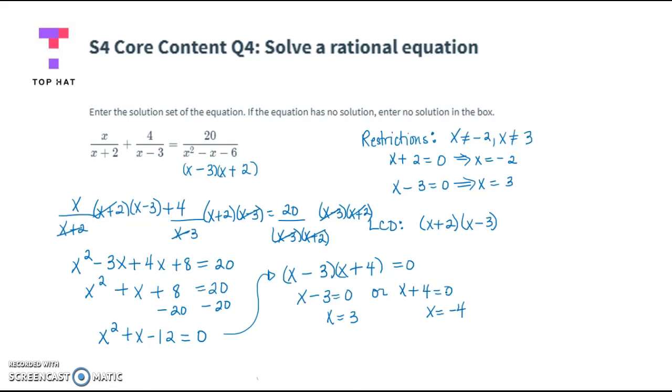But remember what we have to do with rational equations, we don't just stop there. We've got to consider if either of these numbers are extraneous solutions. And notice that we found originally that x can't be 3 because it makes this denominator 0. So 3 is extraneous, which means we need to discard it and keep only the negative 4. So our solution set would just simply contain the number negative 4.